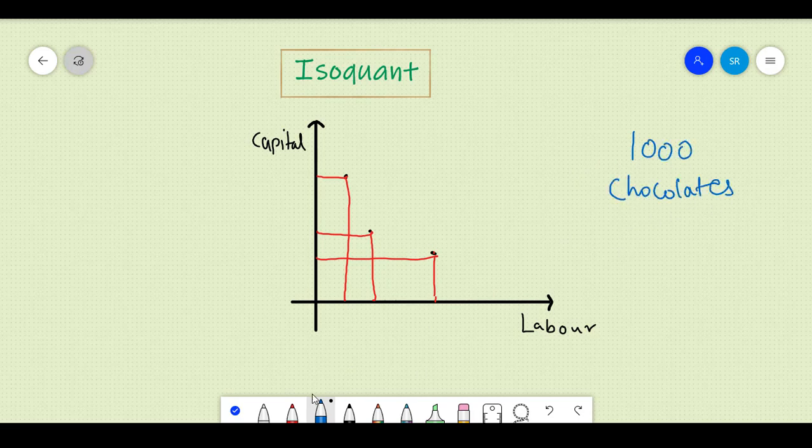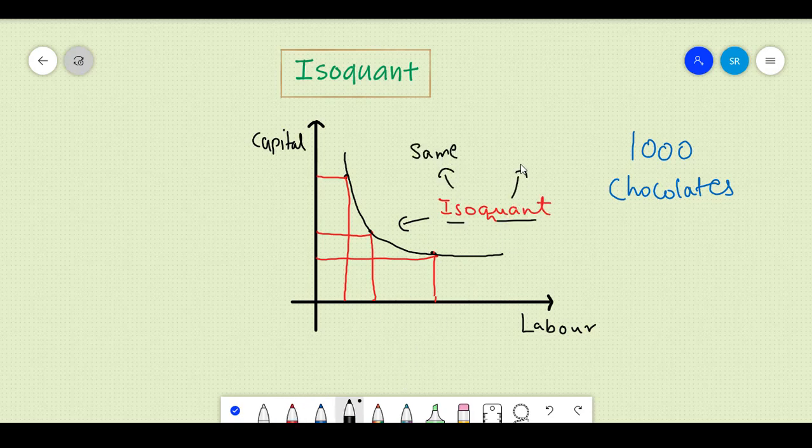When you join these points, you get a convex curve. This curve is called an isoquant. Here iso means same and quant means quantity. Hence, isoquant means same quantities.